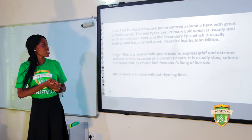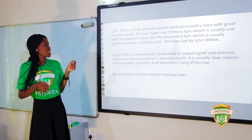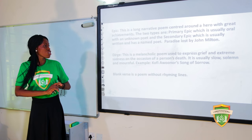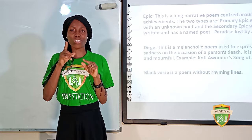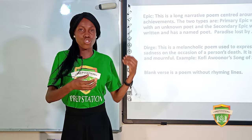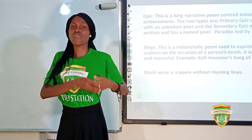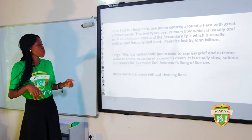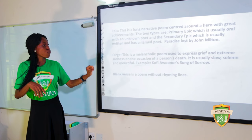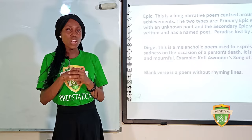A dirge is a melancholic poem used to express grief and extreme sadness on the occasion of a person's death — it is slow, solemn, and mournful. Note the distinction: while an elegy is recited, a dirge is sung. An example is Kofi Awoonor's Song of Sorrow.